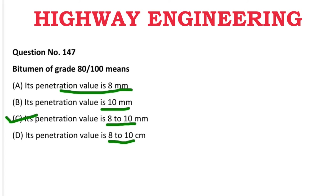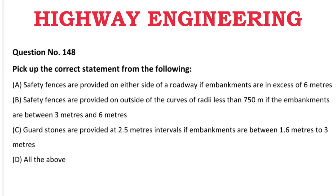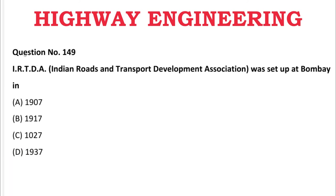Next question: Pick up the correct statement — A: safety fences are provided on either side of the roadway if embankment exceeds 6 m, B: safety fences are provided outside curves of radii less than 750 m if embankment is between 3 m and 6 m, C: guard stones are provided at 2.5 m intervals if embankment is between 1.6 m and 3 m, D: all the above. The correct answer is D, all the above.